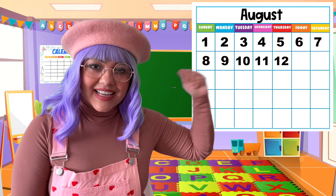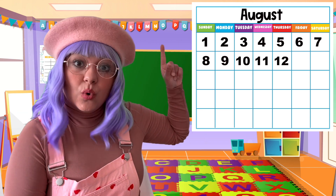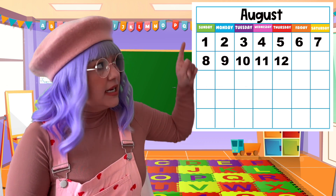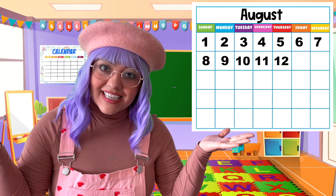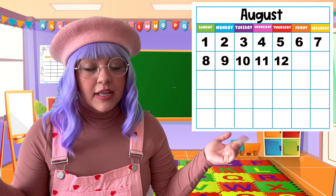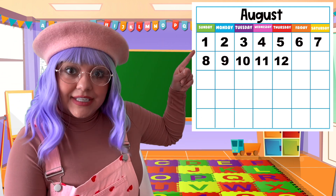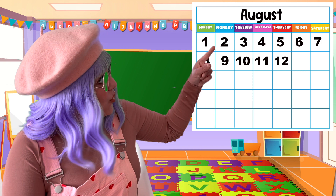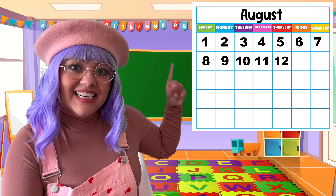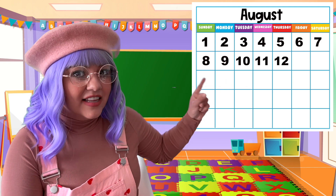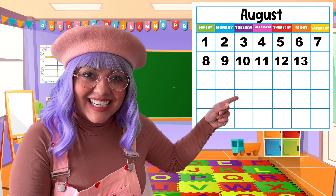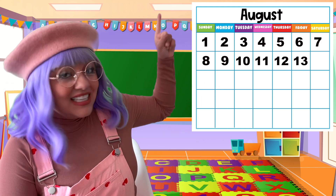Let's get started with our calendar. Let's take a look. We're in the month of August and yesterday was Thursday, August 12. What's the date today? Let's find out what comes after the number 12. Let's count. Ready? 1, 2, 3, 4, 5, 6, 7, 8, 9, 10, 11, 12. What comes after 12? 13. Great job. Today is August 13.